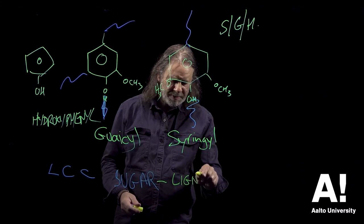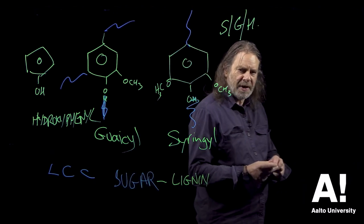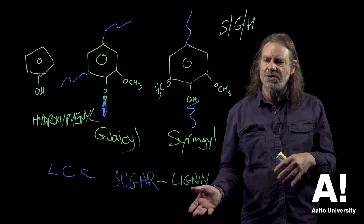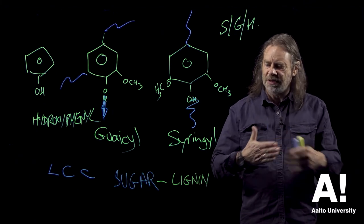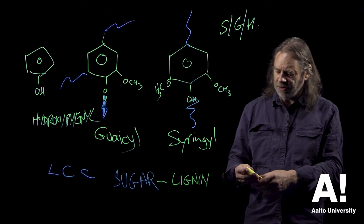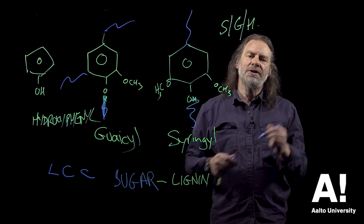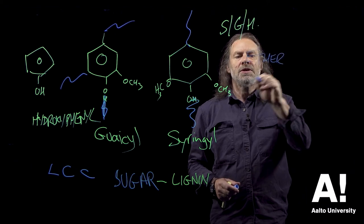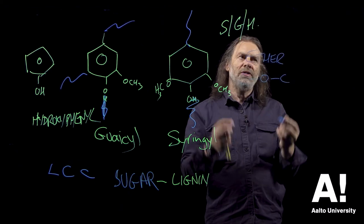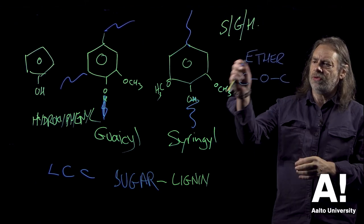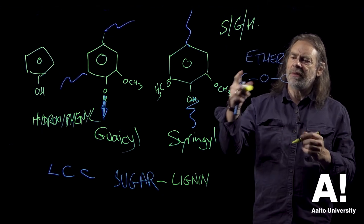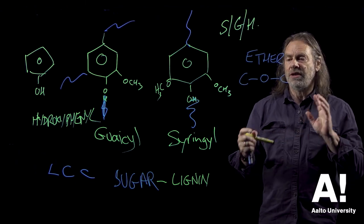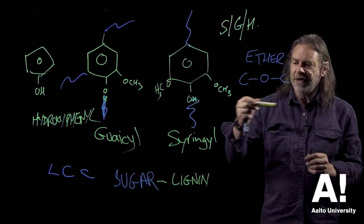The bond between the hemicellulose backbone and the microfibril is hydrogen bonding, so that can be broken — it can stick and unstick. This is a chemical bond, and there are two types of bond that can form between the sugars and the lignin. You can either have an ether bond, which is a carbon-oxygen-carbon bond. That's quite a resistant chemical bond to chemical attack, and this is the sort of bond you get between the hemicelluloses and the lignin in the wood cell wall.